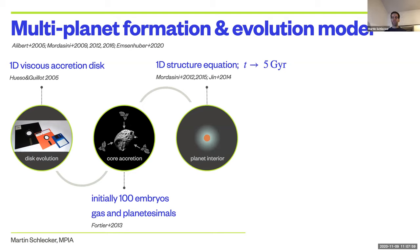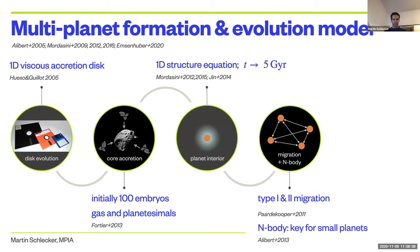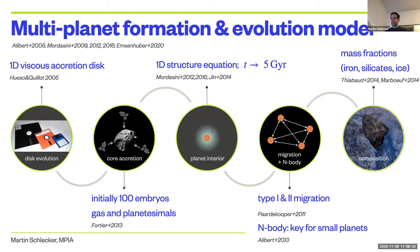The model includes planetesimal and gas accretion onto up to 100 protoplanets that grow in the same disk. We also solve for the interior structure equation, which is very important for the long-term evolution of the planets — for example, if you want to compute transit radii gigayears later. There's orbital migration, and especially for the terrestrial planets and small mass planets including super-Earths, the n-body interactions between those protoplanets, and also after the disk dispersed, their gravitational interactions are tracked by an n-body, which really defines the final system architecture. For this project in particular, we also need to keep track of the compositions of planetesimals accreted, using an equilibrium chemistry model that tracks the abundances of iron, silicates, and ice.